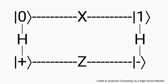Before I end this lecture, I wanted to share a handy graphic from a quantum computing high school module course by Cornell and Fermilab. Here is a diagram of how we get to each of the different states covered in the course so far. To go from the |0⟩ state to the |1⟩ state or vice versa, we apply the X gate. To go from the |0⟩ state to the |+⟩ state or vice versa, we apply the Hadamard gate. To go from the |+⟩ state to the |−⟩ state or vice versa, we use the Z gate. And to go from the |1⟩ state to the |−⟩ state or vice versa, we apply the Hadamard gate.